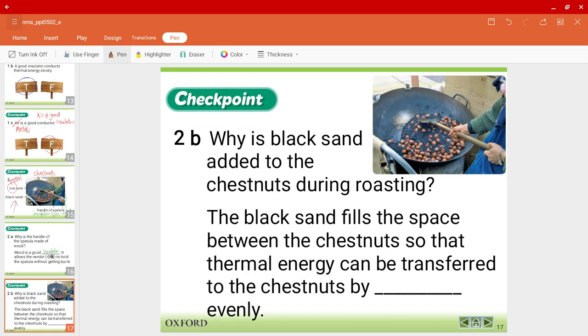Question B: Why is black sand added to the chestnuts during the roasting process? The black sand fills the space between the chestnuts so that thermal energy can be transferred to the chestnuts by conduction evenly.